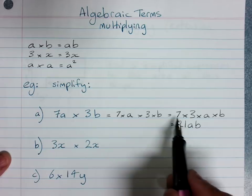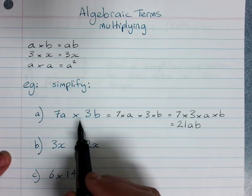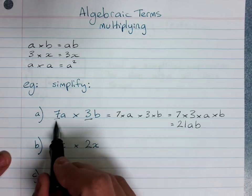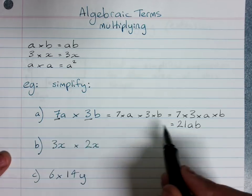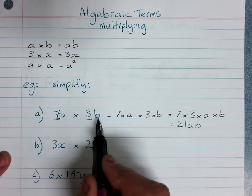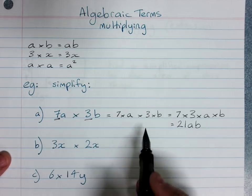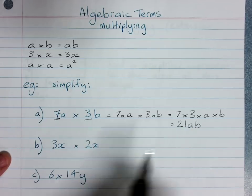But you see what we could have done to go straight from question to answer is multiply the coefficients, 7 times 3 is 21, and then just combine our algebraic pronumerals by getting rid of the times sign.